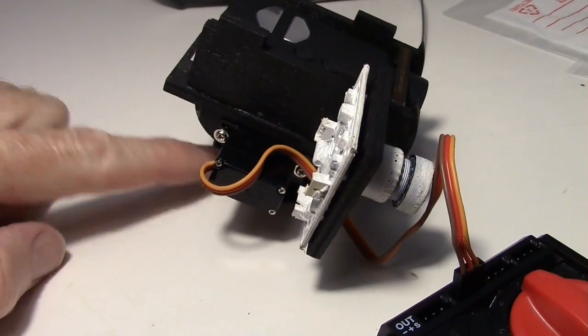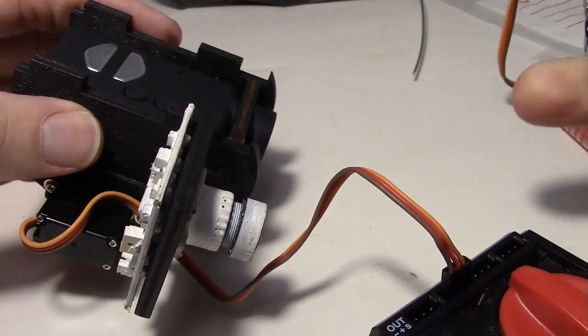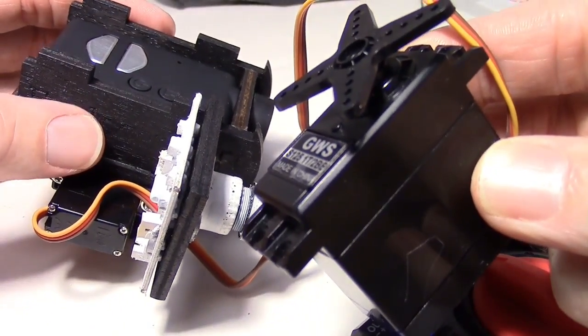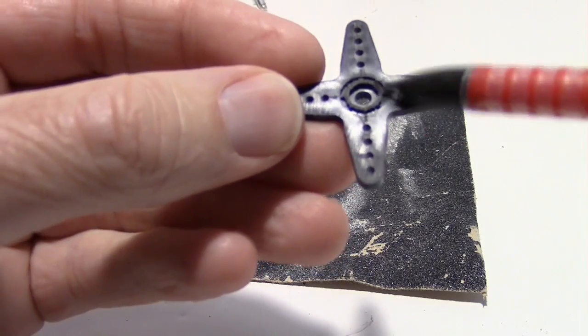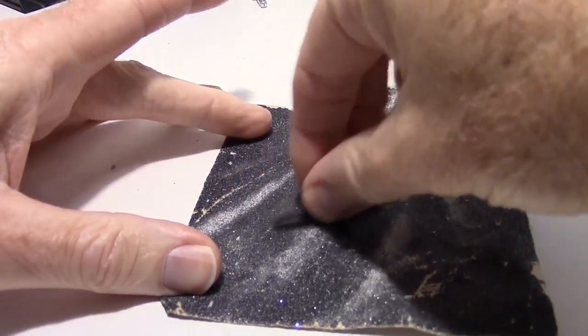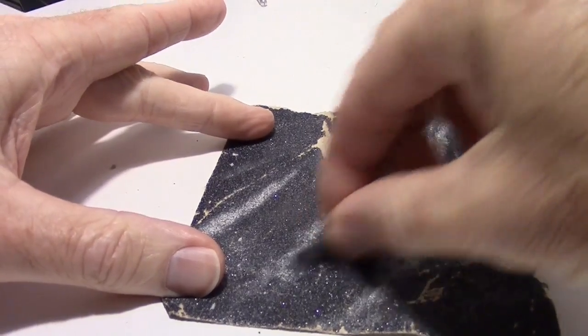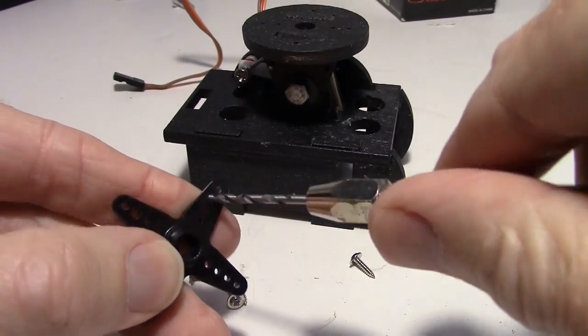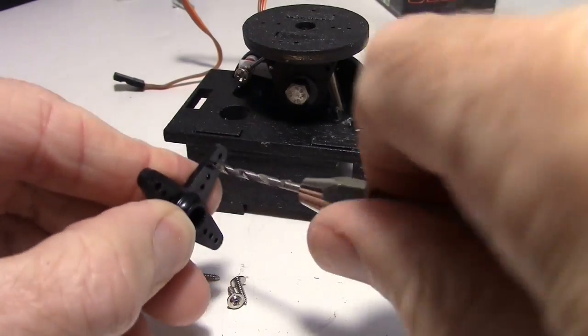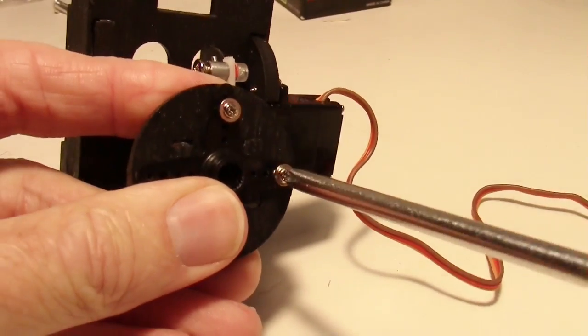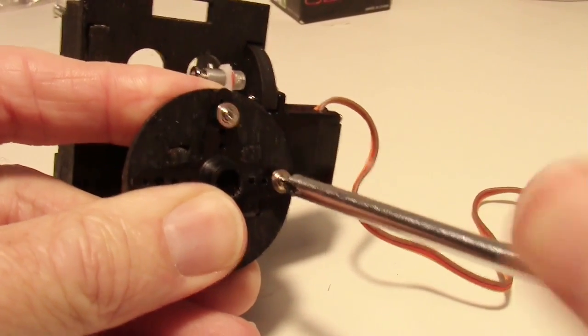So the next thing will be mounting the base to the 360 degree servo. I'm going to sand off this flange with a little piece of sandpaper. So I'm going to drill out the holes with a hand drill here just to fit the servo screws. Now just fastening the four screws to the base.